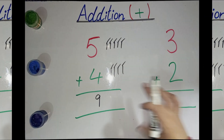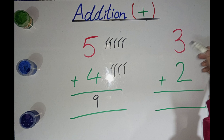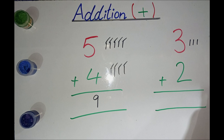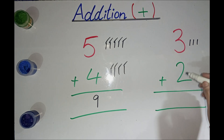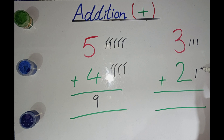Now solve this question. What is this number? 3. Make 3 lines: 1, 2, 3. What is this number? 2. Now make 2 lines.